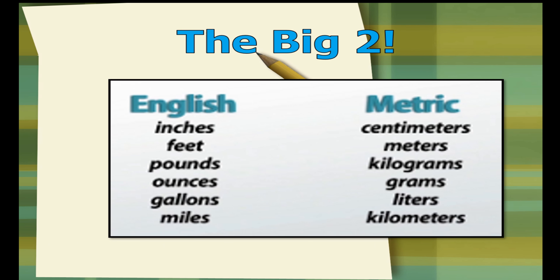When you want to tell someone how big or how far away something is, you need a common system for communicating this information. There are two most common systems of measurement: the metric system, widely used in Europe and most of the world, and the imperial or British system, also called the English system, which is commonly used in the USA.